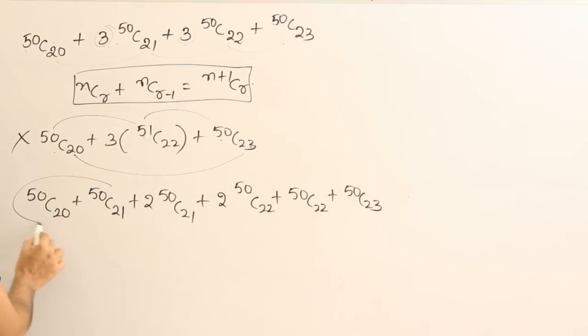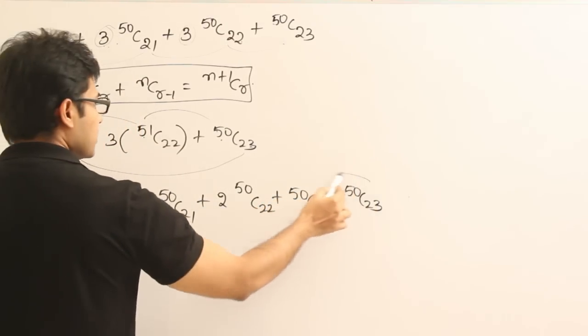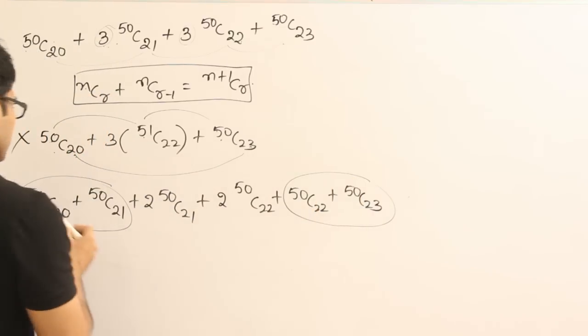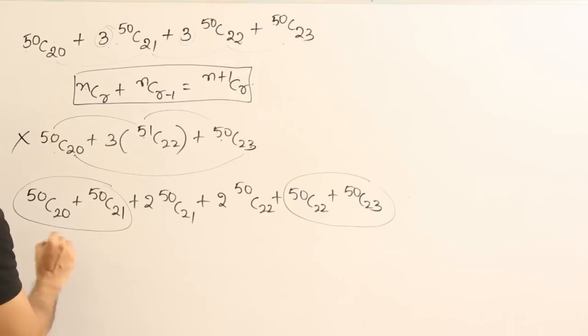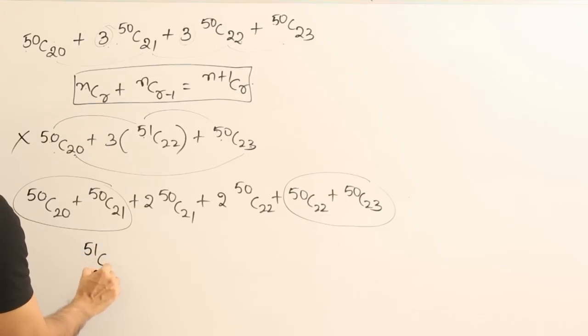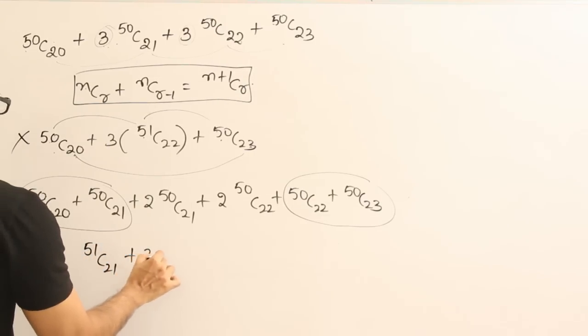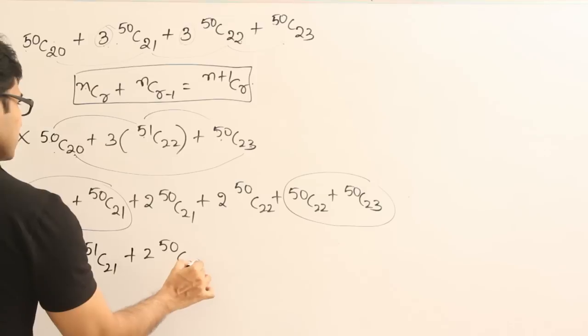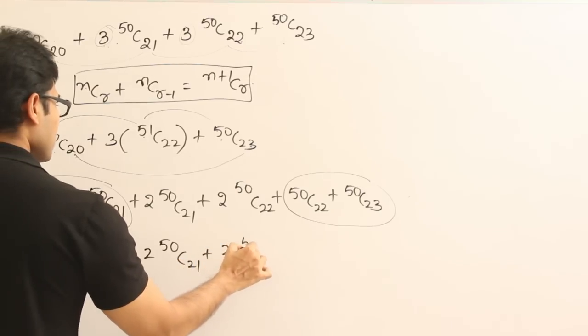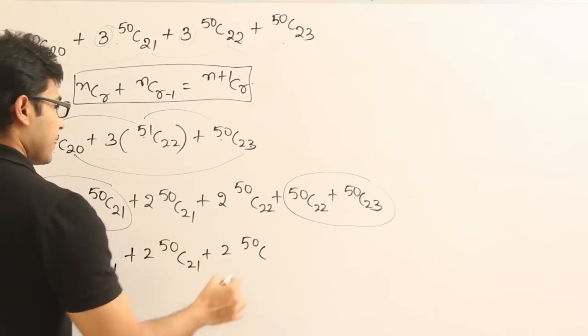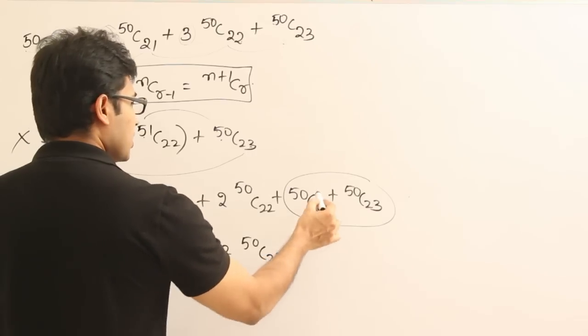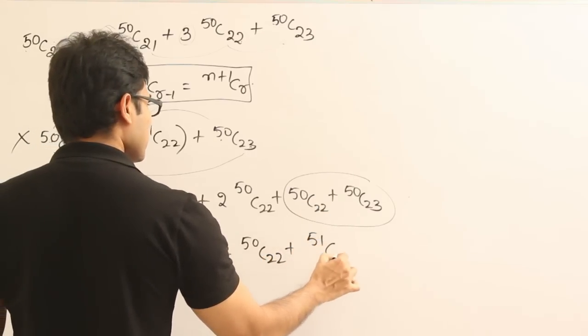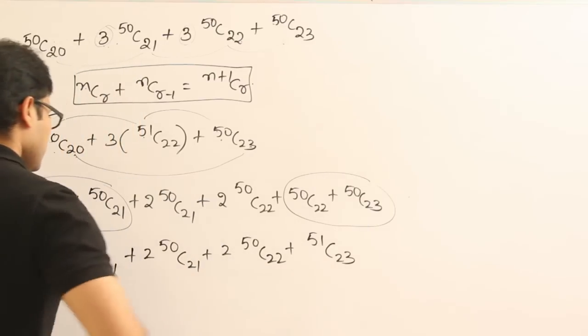Now we can combine these two and we can combine these two. Right? So just see what happens here. If I combine these two, I get 51C21 plus 2 into 50C21 plus 2 into 50C22 plus here I am going to get 51C23.